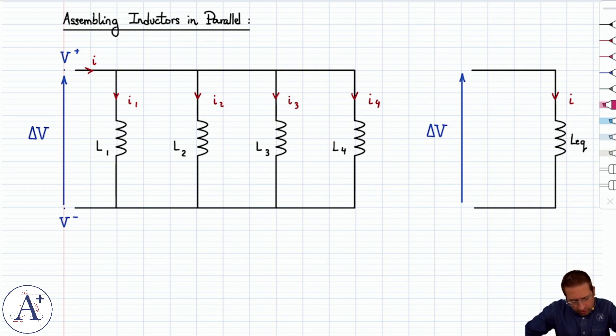Now the four inductors here are in parallel because they're all connected the same way across the voltage delta V. The top of each inductor is connected to the wire that is at the potential V+, and the bottom of each inductor is connected to the wire that is at the potential V-. Therefore, across each inductor, there's a voltage delta V.